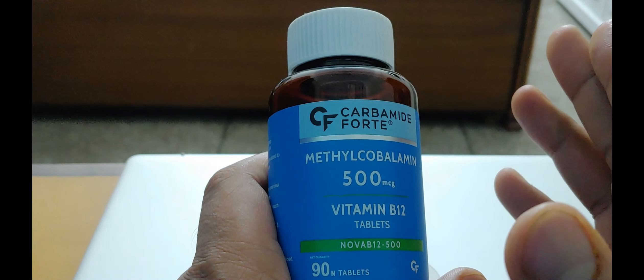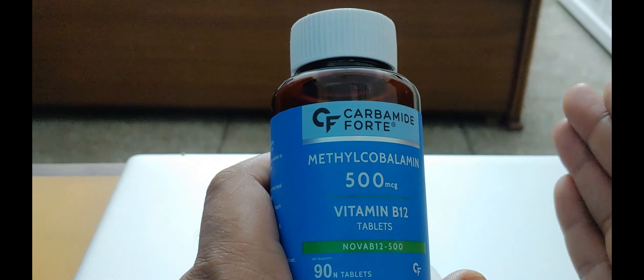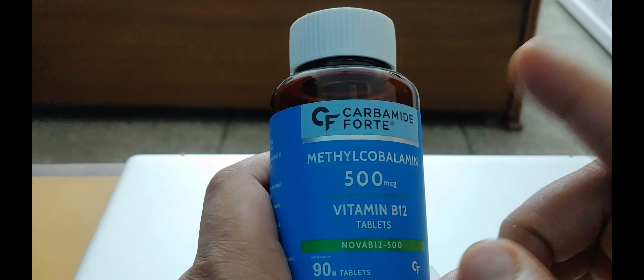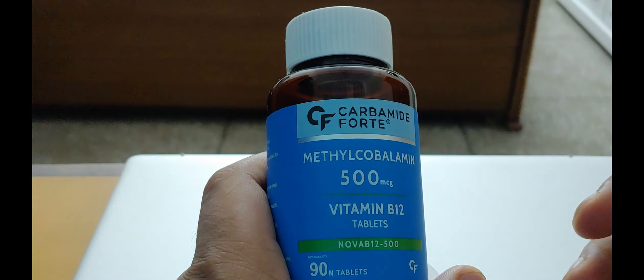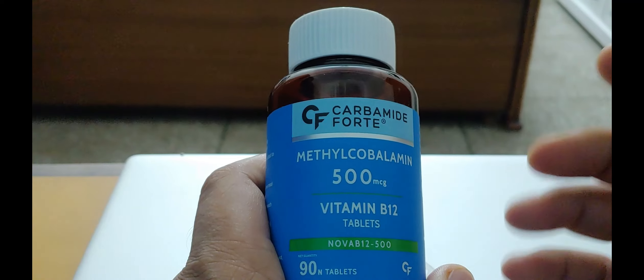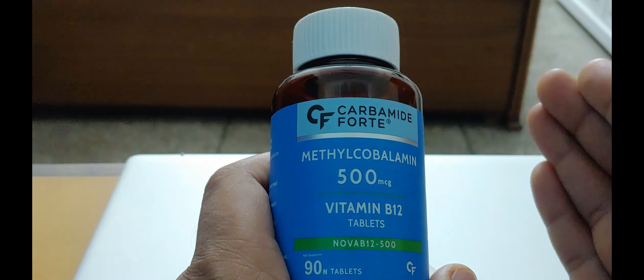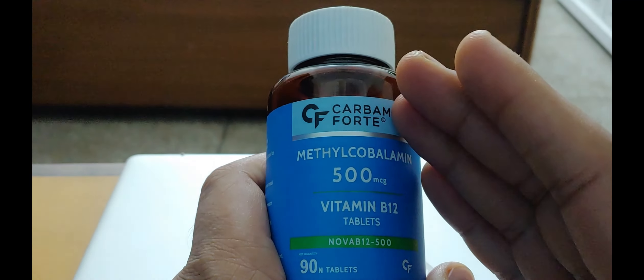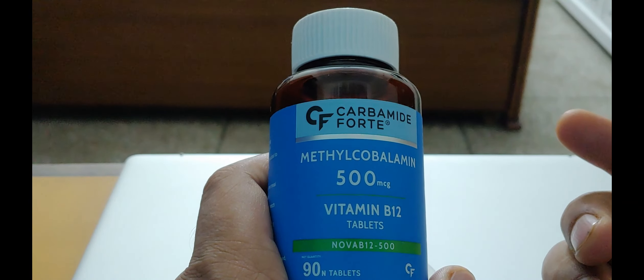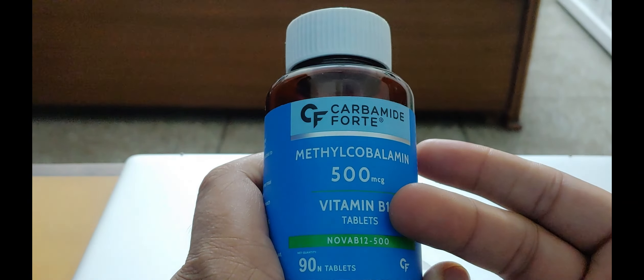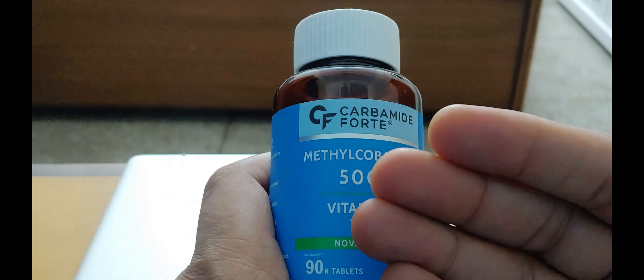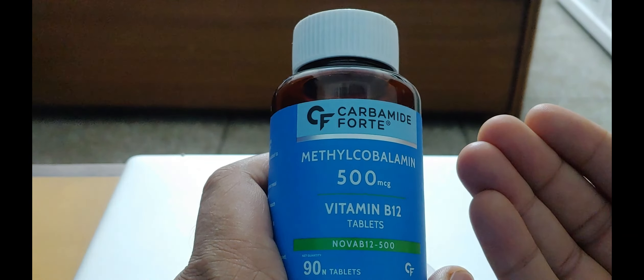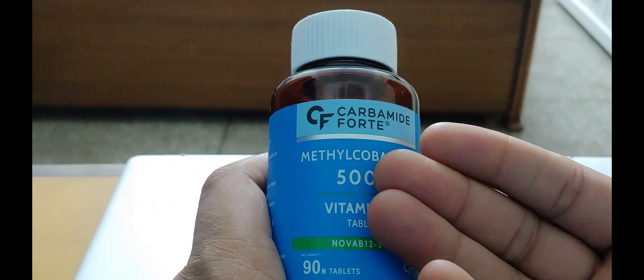Now there are two types of this Vitamin B12. One is cyanocobalamin, which is the synthetic version. This is methylcobalamin, which is the natural version. The first one is the synthetic version made by man. This is the natural version and it is relatively much better absorbed by the body. That's why I opted for methylcobalamin instead of cyanocobalamin.